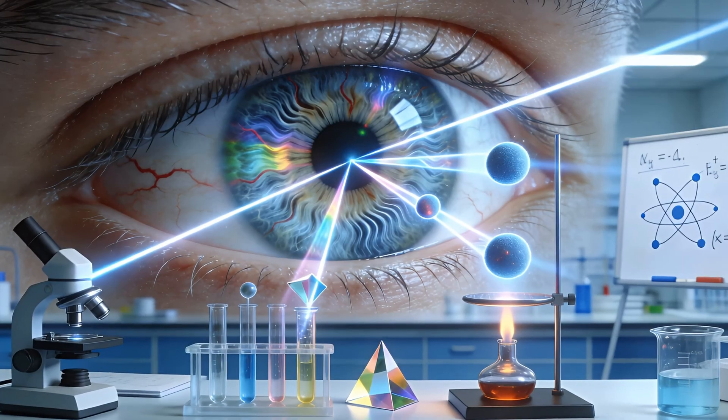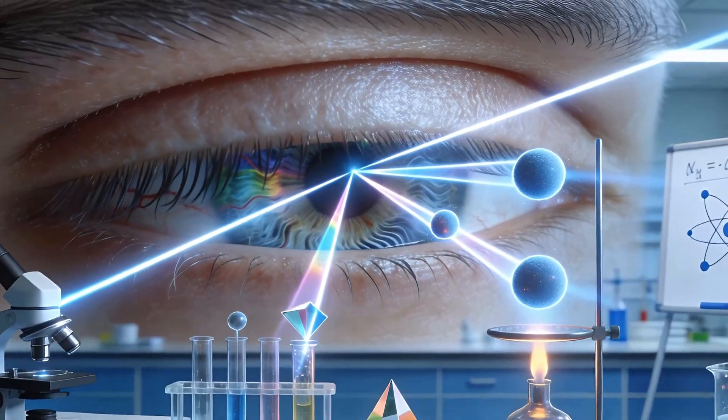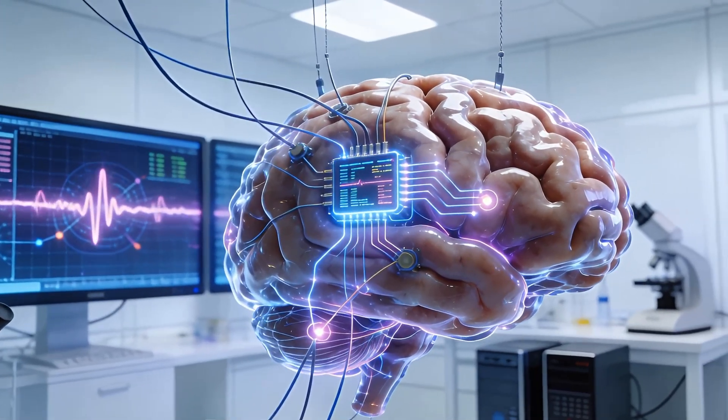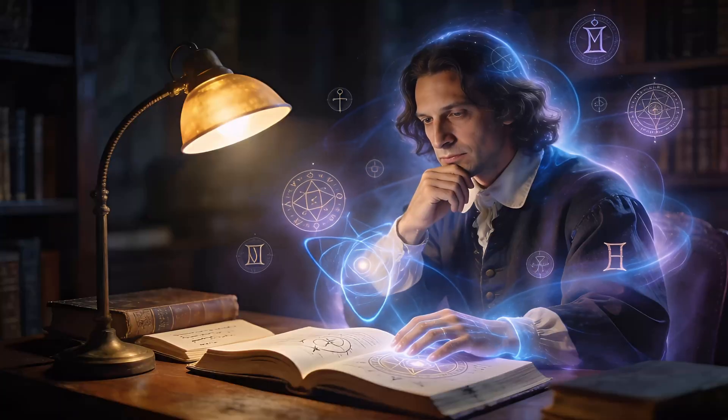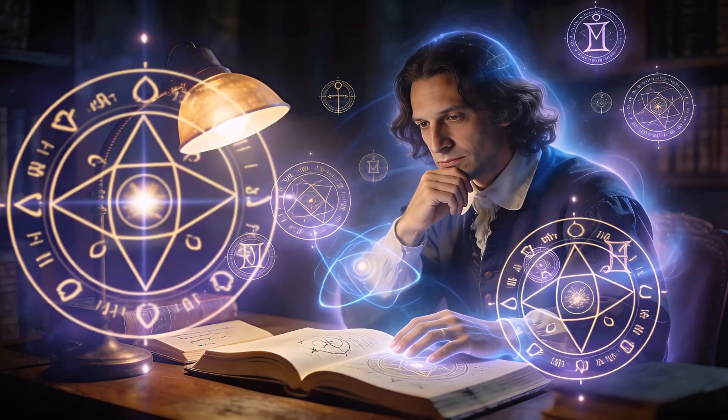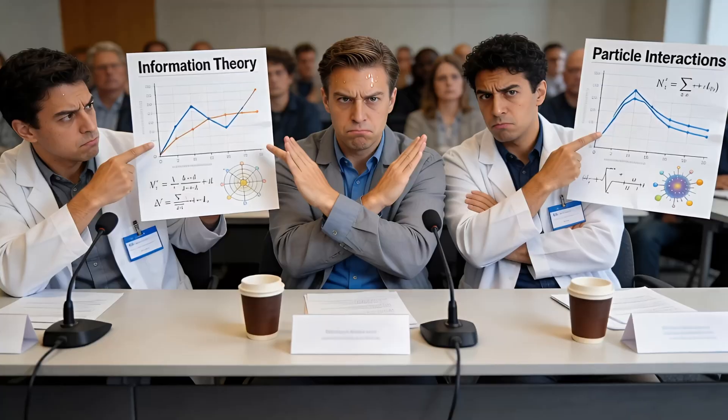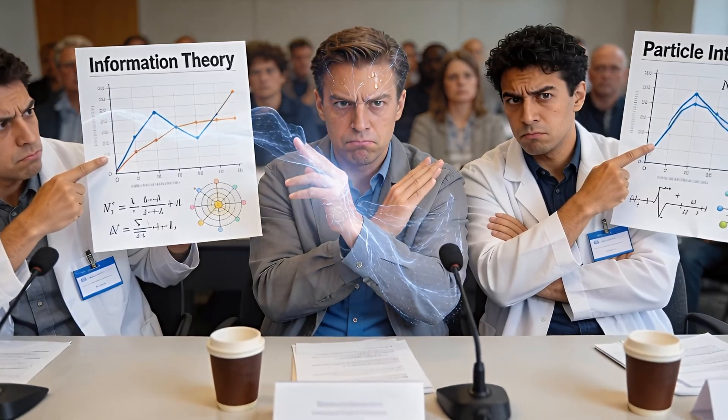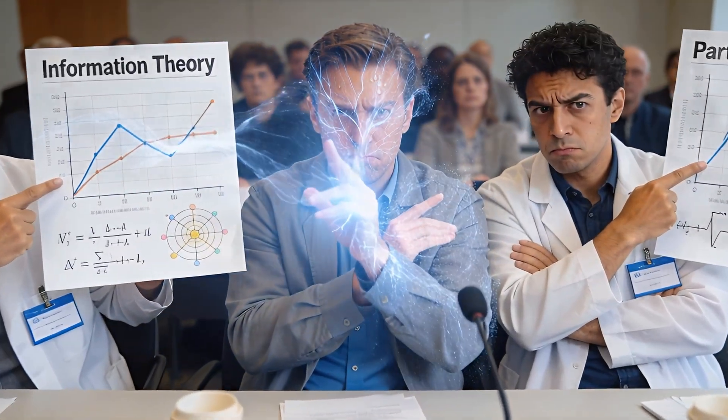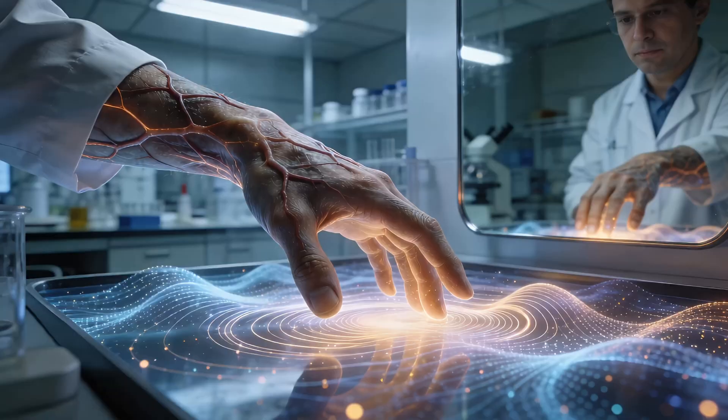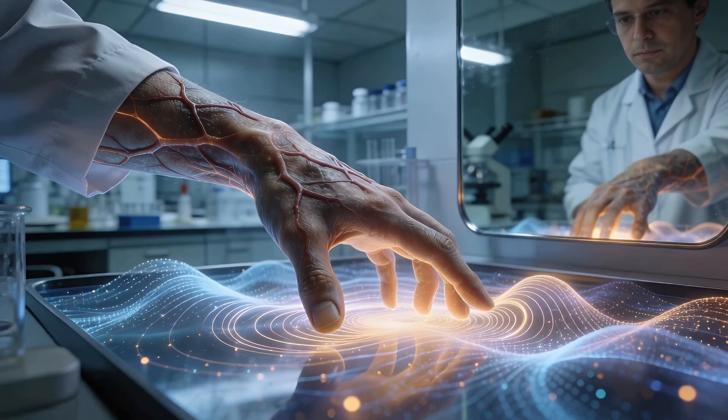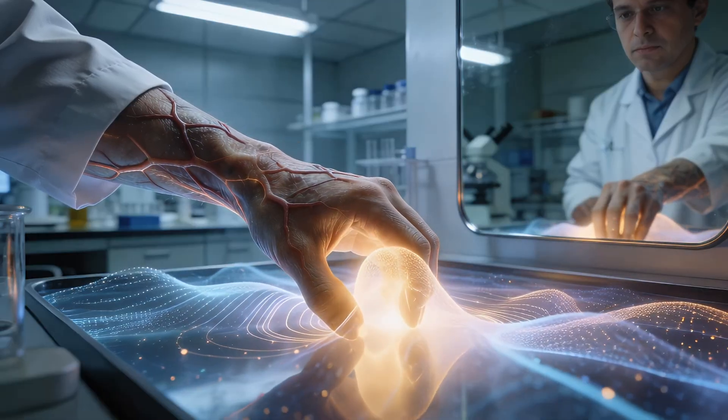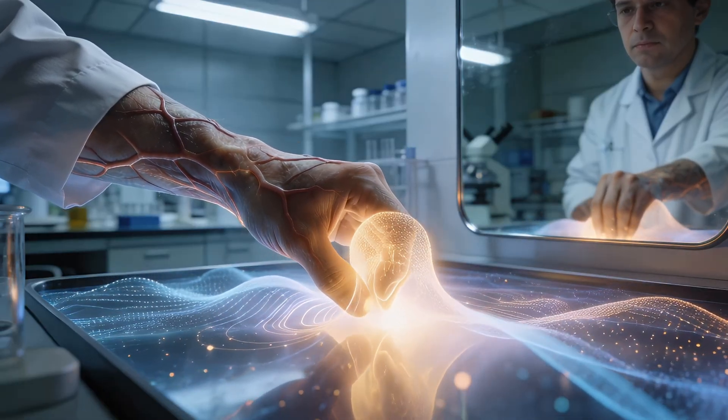Now, let's talk implications. If observation shapes reality, does that mean consciousness plays a role? Some think so, tying it to philosophy or even spirituality, like the universe needs observers to exist. But most physicists say no. It's about information and interaction, not minds. Still, it blurs the line between observers and observed. We are not separate from the quantum world. We are part of it.